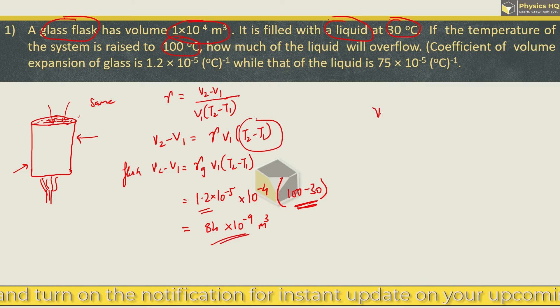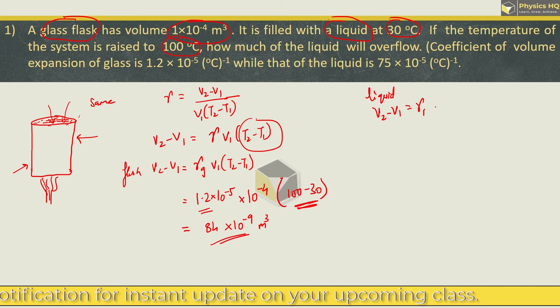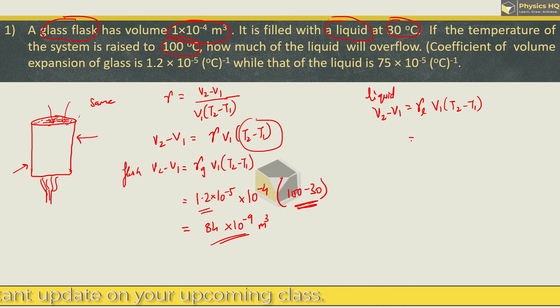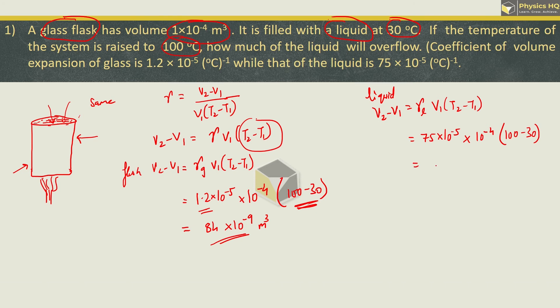Now, change in volume of the liquid is gamma of this liquid into the initial volume times T2 minus T1. Gamma of liquid is 75 into 10 raised to minus 5. Initial volume is 10 raised to minus 4, and change in temperature is 100 minus 30 which is 70. 70 into 75 will give us 5250, 10 raised to minus 9 meter cube. Now, how much is the overflow?